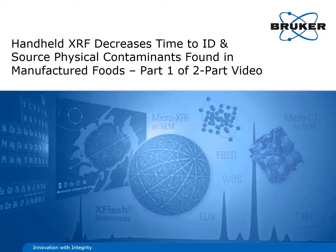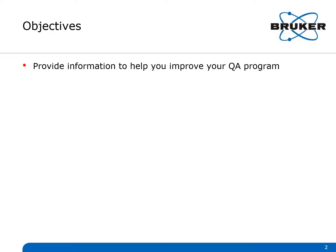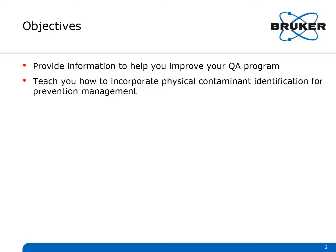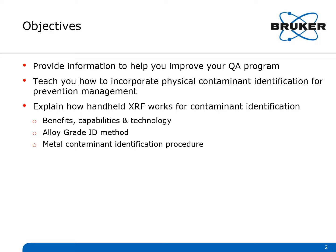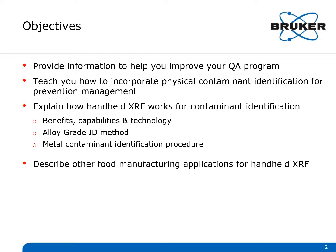We'd like to tell you how handheld XRF can decrease the time it takes to identify and source physical contaminants found in manufactured foods. This video is part one of a two-part series. Our objectives are to provide you with information to improve quality assurance, teach you how to incorporate physical contaminant identification into your prevention management program, explain how handheld XRF works for contaminant identification — including its benefits, capabilities, and technology — the alloy grade ID method, the metal contaminant ID procedure, and other food manufacturing applications for handheld XRF.